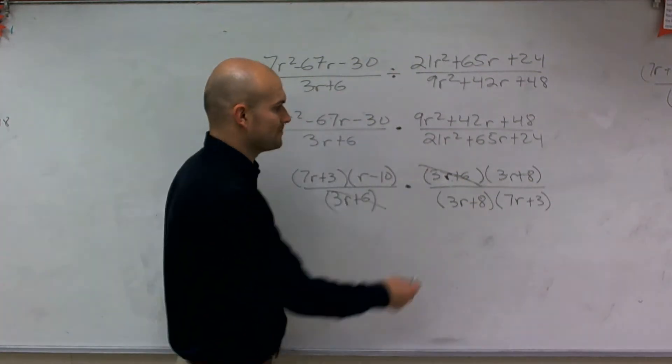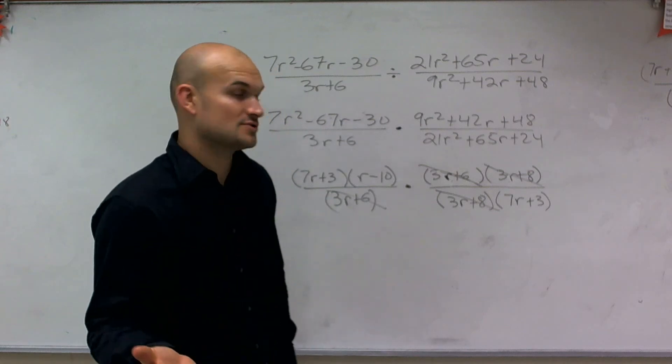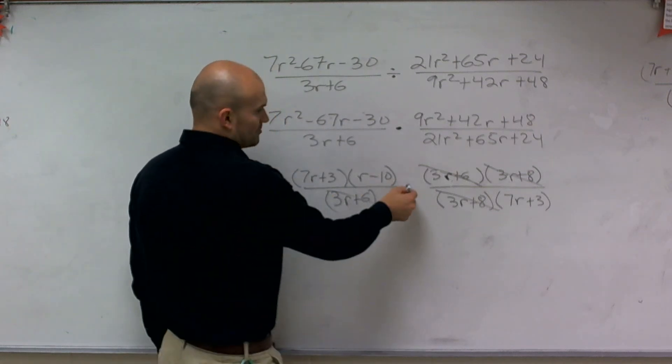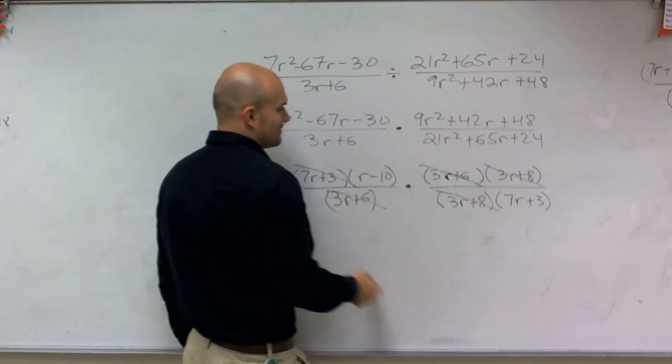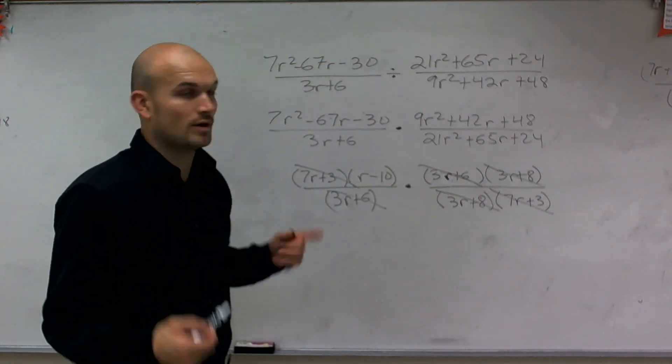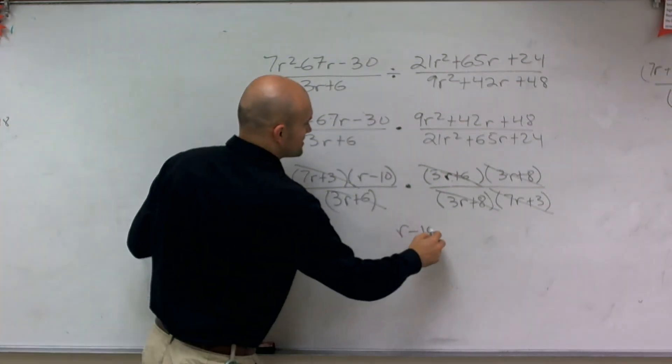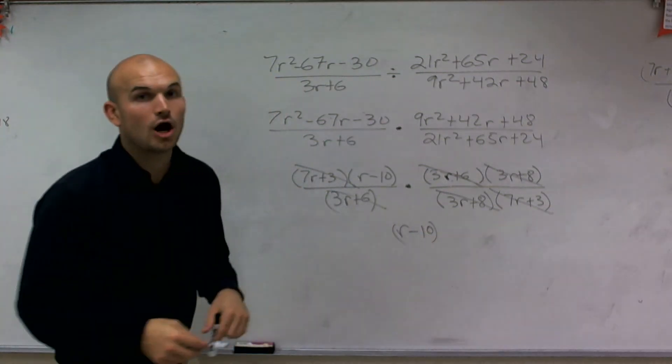Well, a 3r plus 8 divided by 3r plus 8, that also goes to 1. And then you notice when you multiply these over, you're going to have a 7r plus 3 divided by 7r plus 3 also goes to 1, or as we say, cancel out. Therefore, my final answer is I'm only left with the expression r minus 10.